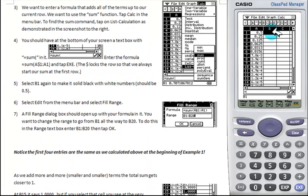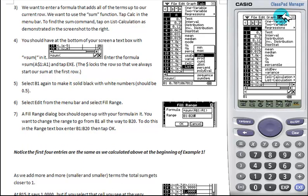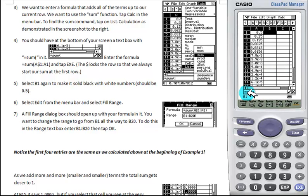We want a formula for the sum, so we're going to go to Calc, go to List Calculations, and select Sum. Notice here at the bottom we have equals sum, and we're going to enter the formula given as $1, colon A1.